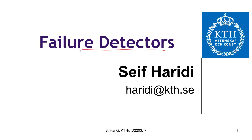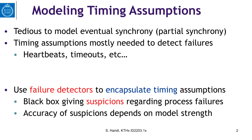We will discuss in this unit failure detectors. In a distributed system, reasoning about time makes designing and writing algorithms quite complex. Timing assumptions need somehow to be abstracted. One way to abstract timing assumptions in a declarative and nice way is to use a device called a failure detector. A failure detector is normally implemented using heartbeats and timeouts. We use a failure detector to encapsulate the notion of time — it is a black box giving suspicions regarding process failures.